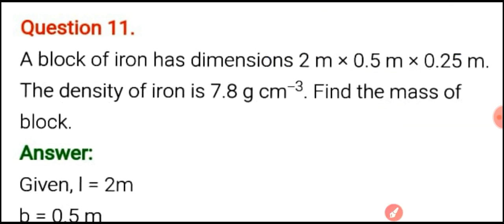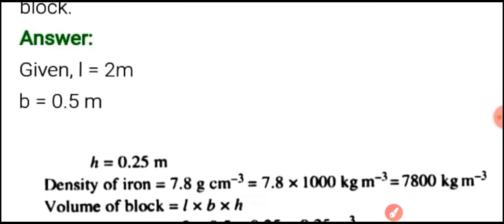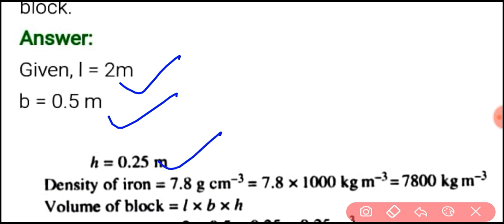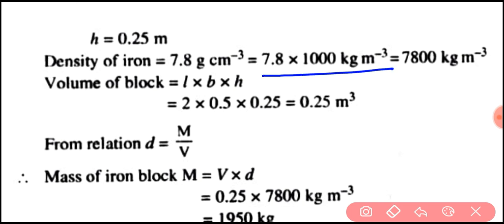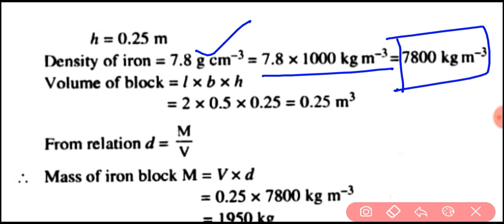L is given, B is given, H is given, and density is also given. One more thing we have to do: we have to convert density into kilogram per meter cube. It is given in gram per centimeter cube. To convert to kilogram per meter cube, we multiply by 1000, giving us 7800 kilogram per meter cube.